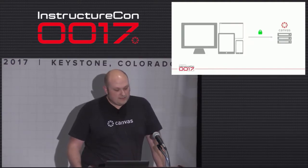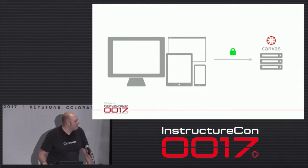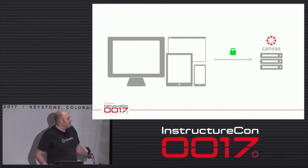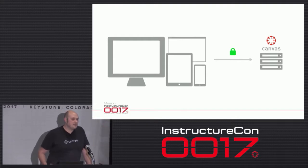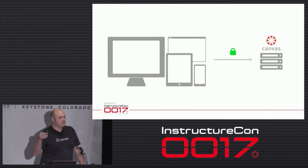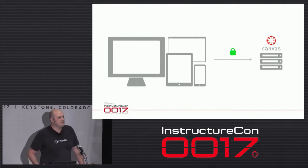We're going to go through a number of case studies with each of these platform areas. The kinds of applications that can be built on the API include native desktop applications, mobile applications, and web applications that are external or internal to Canvas. Brad's going to talk about how you can inject your application into Canvas. But all of these can be built on top of the Canvas API.